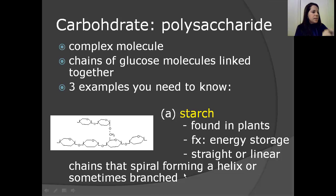On to polysaccharides. Polysaccharides are a complex molecule. They are actually chains of glucose molecules linked together. And there's three main examples that you need to be able to know and recognize. The first one is starch. Starch is found in plants, and its function is energy storage for the plant. If you look at the characteristic of starch when you're looking at it in diagrams here, it's always going to be straight or linear chains that spiral forming a helix or sometimes branching.